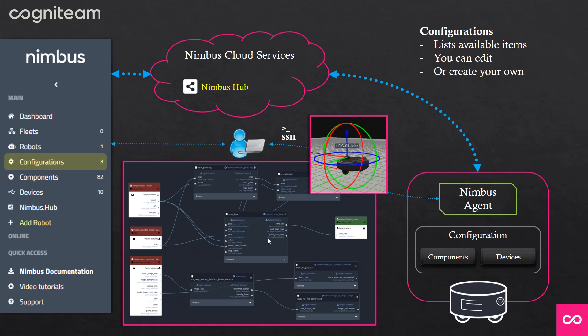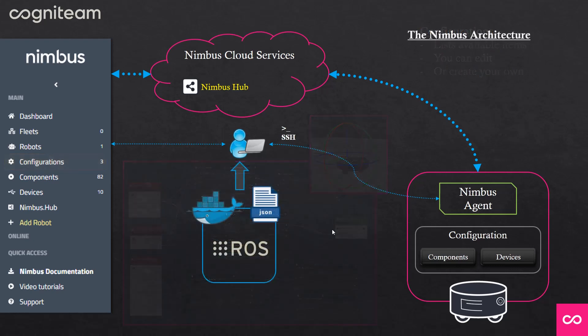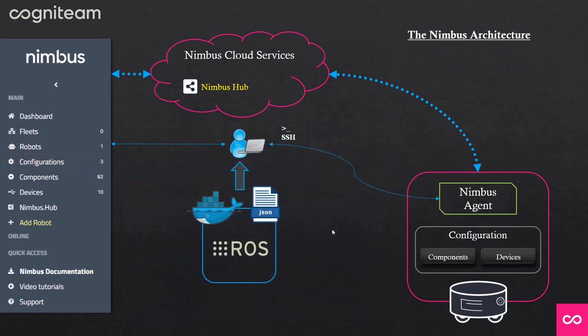You can deploy your updated configuration with ease to your robot or your entire fleet. This is the Nimbus architecture, and in the next tutorials we'll go through each of these items in great detail.